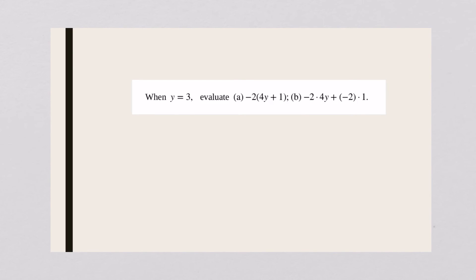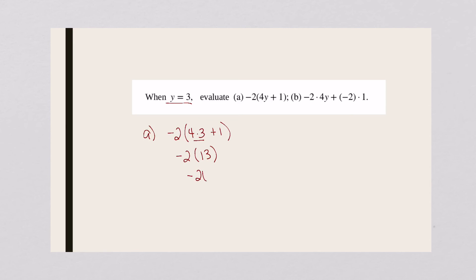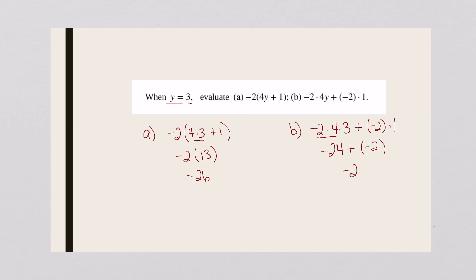On this one we're going to do the same process and see which one is easier. On part a, I've got negative two times four times three — letting y be three. Four times three is twelve, twelve plus one is thirteen, negative two times thirteen is negative twenty-six. On part b, I've got negative two times four times three plus negative two times one: negative two times four is negative eight, negative eight times three is negative twenty-four, negative two times one is negative two. Adding those together I get negative twenty-six — same answer.